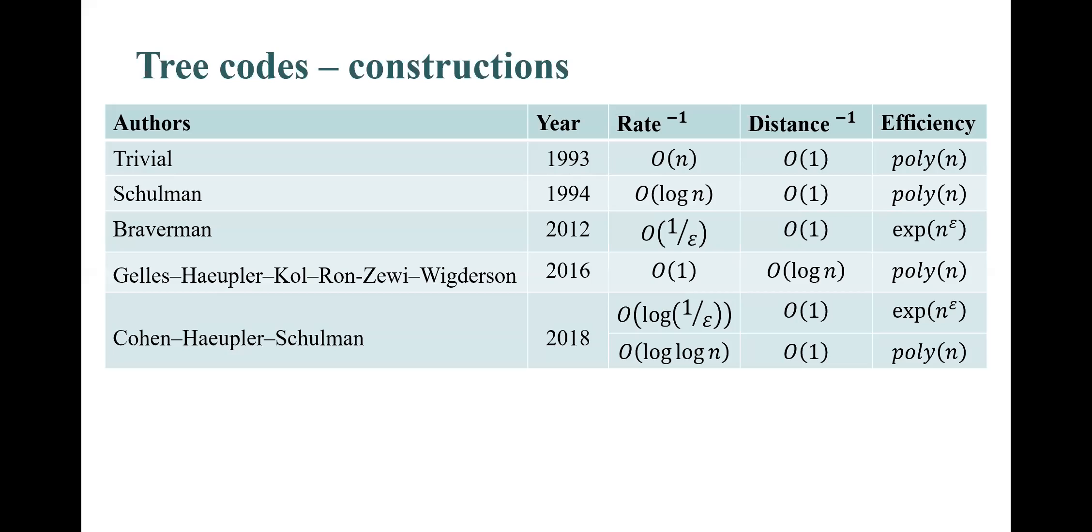The problem of constructing an asymptotically good tree code has drawn a lot of attention over the years. This table presents some of the constructions we have these days. The state of the art is a construction by Cohen, Haeupler and Schulman from 2018. Note that when epsilon is taken to be one over log n, they get an explicit tree code that has a non-vanishing distance and a rate of one over log log n. Despite the significant progress, presenting an explicit construction for asymptotically good tree code remained a major open problem.